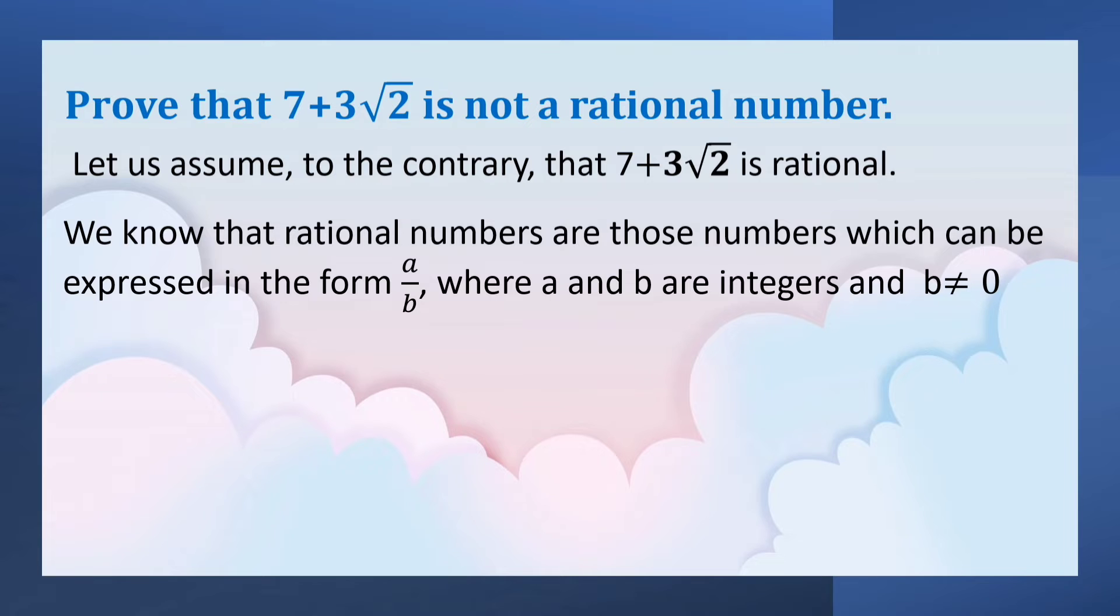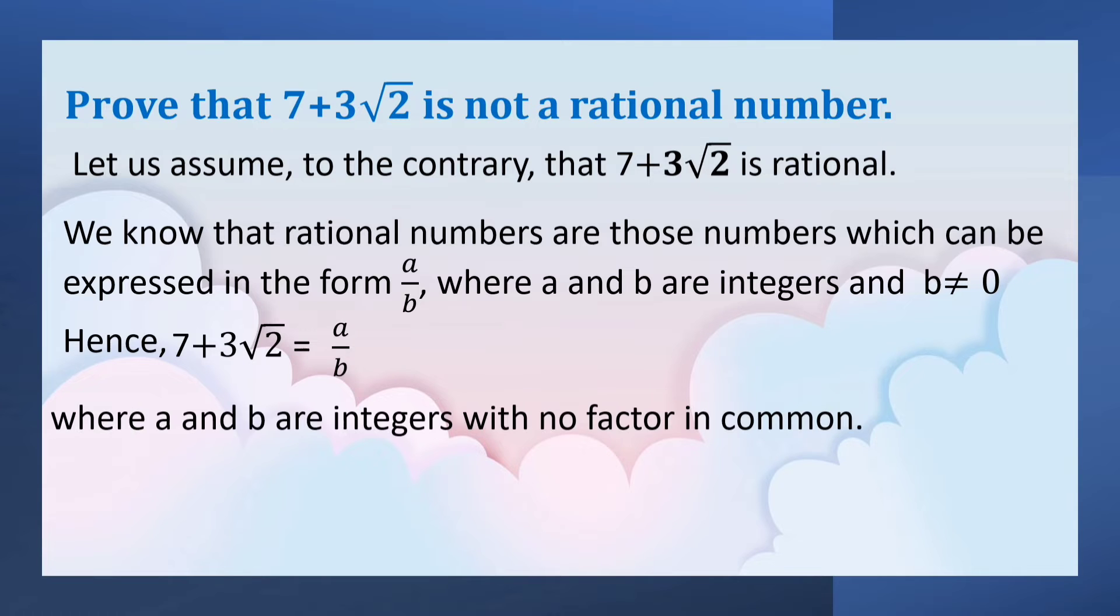Now we can write 7 plus 3 root 2 equals a by b, where a and b are integers with no factor in common. Means they are coprime numbers.